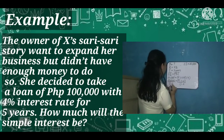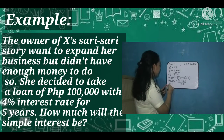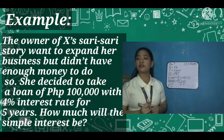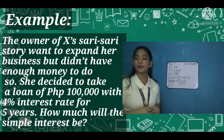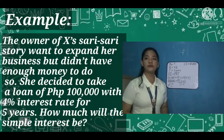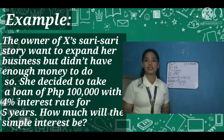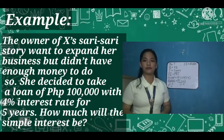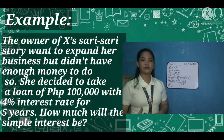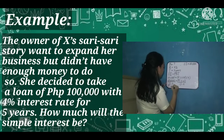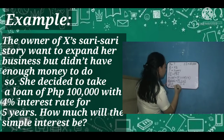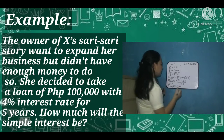We have P equals 20,000 divided by 0.2. The answer is 100,000.